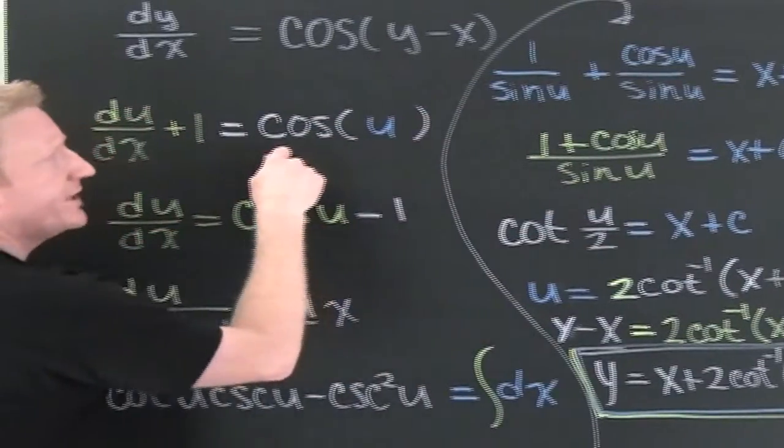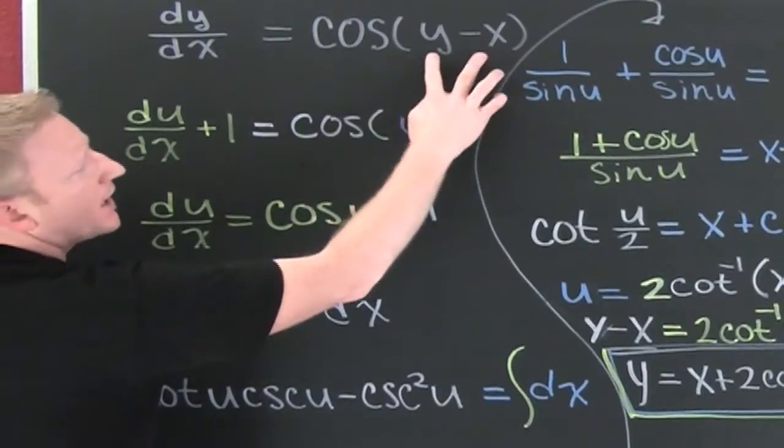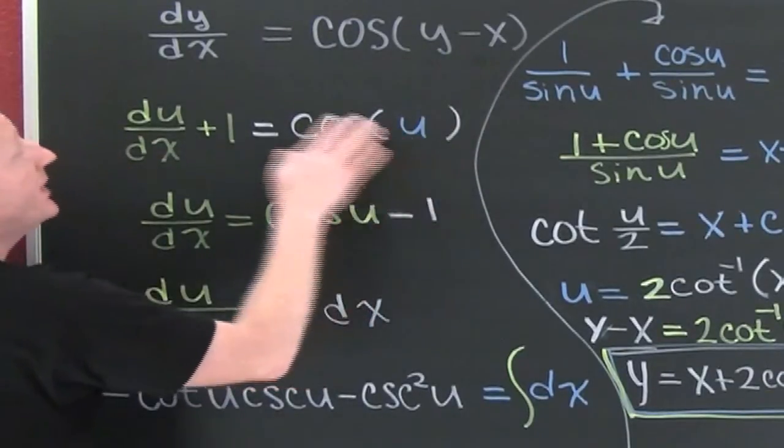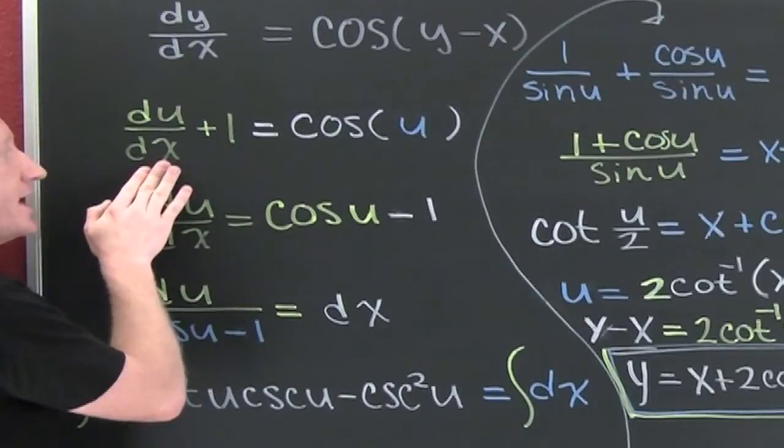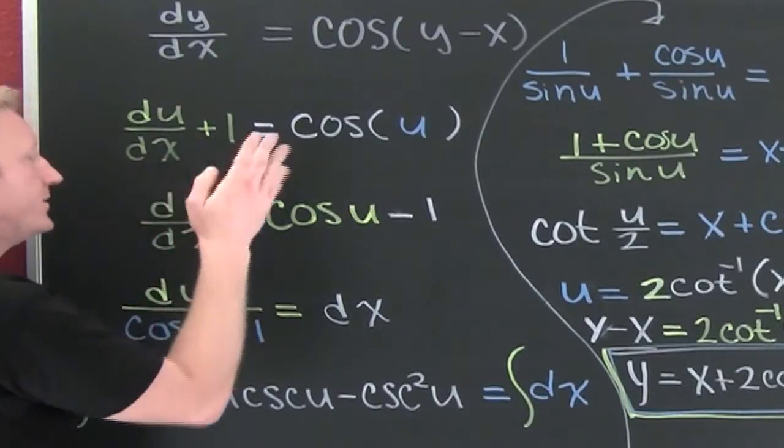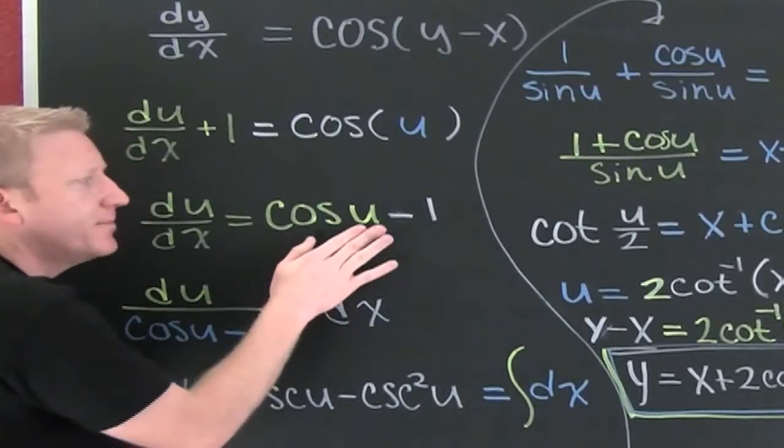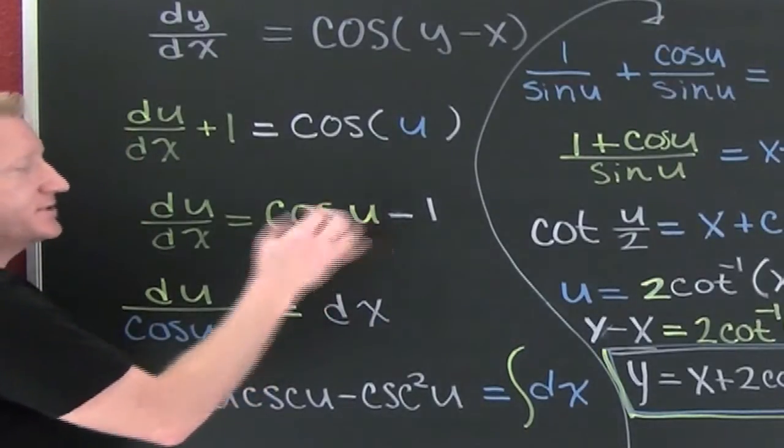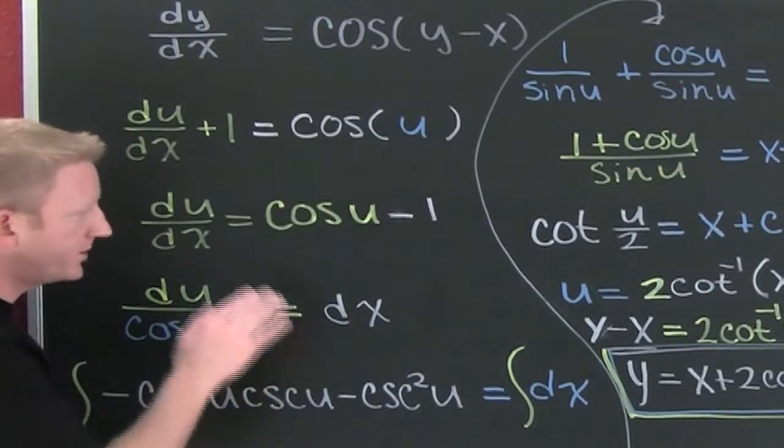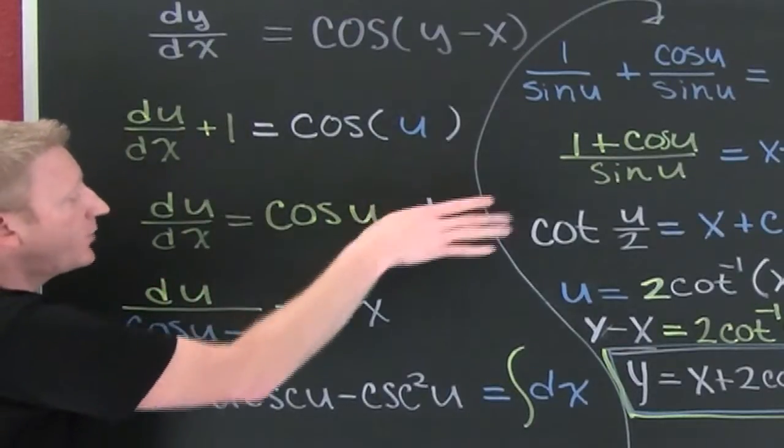I replaced x minus y with u and I replaced dy/dx with du/dx plus one. Why did I do this? Because now I have something that's separable. In my argument I only have a single expression.